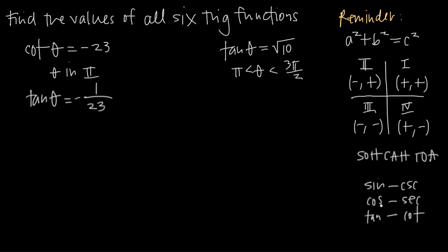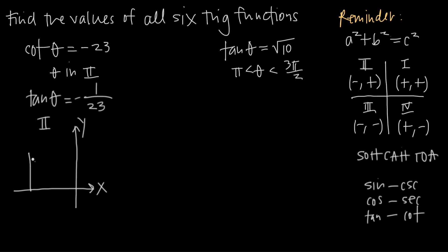To find the other four, we remember that theta is in quadrant two. Our quadrants are quadrant one, two, three, and four. We focus on quadrant two and sketch a right triangle inside it, with the angle theta sitting at the origin.